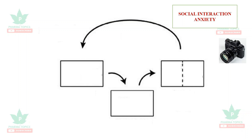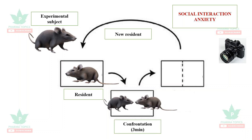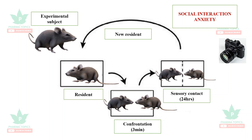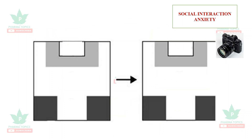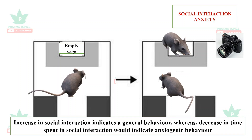The social interaction anxiety test involves adding an experimental subject into the cage of a resident animal. This causes a confrontation which is observed for approximately three minutes, and social sensory contact is also measured for 24 hours automatically. A decrease in time spent in social interaction indicates anxiogenic behavior, making this a suitable model for screening anxiolytic drugs.